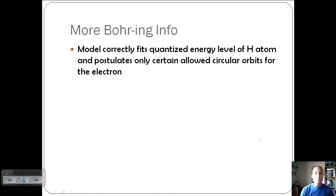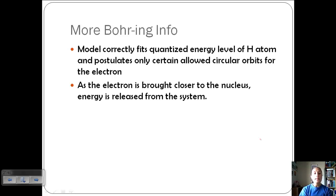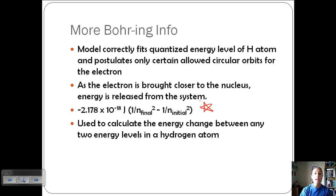Let's look at a little bit more information. This model correctly fits the quantized energy level of the hydrogen atom. And it postulates and predicts that only certain allowed circular orbits for the electron. So the electron is basically orbiting in these very specific orbits or paths. So as the electron is brought closer to the nucleus, energy is released from the system. It gains energy to move away from the nucleus. As it gets closer, it releases that energy. And so here's that equation that we just used in the previous problem. We can use this to calculate the energy to change between any two energy levels in a hydrogen atom. And so that's what we did in the last example.